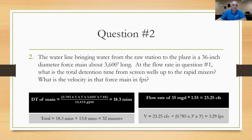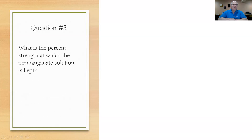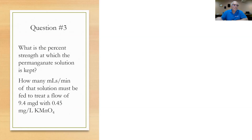Question number three: What is the percent strength at which the permanganate solution is kept? You'll need the concentration in pounds per gallon from the table and convert it to permanganate solution percent. They also ask how many milliliters per minute of that solution you need to feed to treat a flow rate of 9.4 MGD with 0.45 mg/L KMnO₄. So it's a two-part question: first convert to percent strength, then use that to determine the required feed rate.